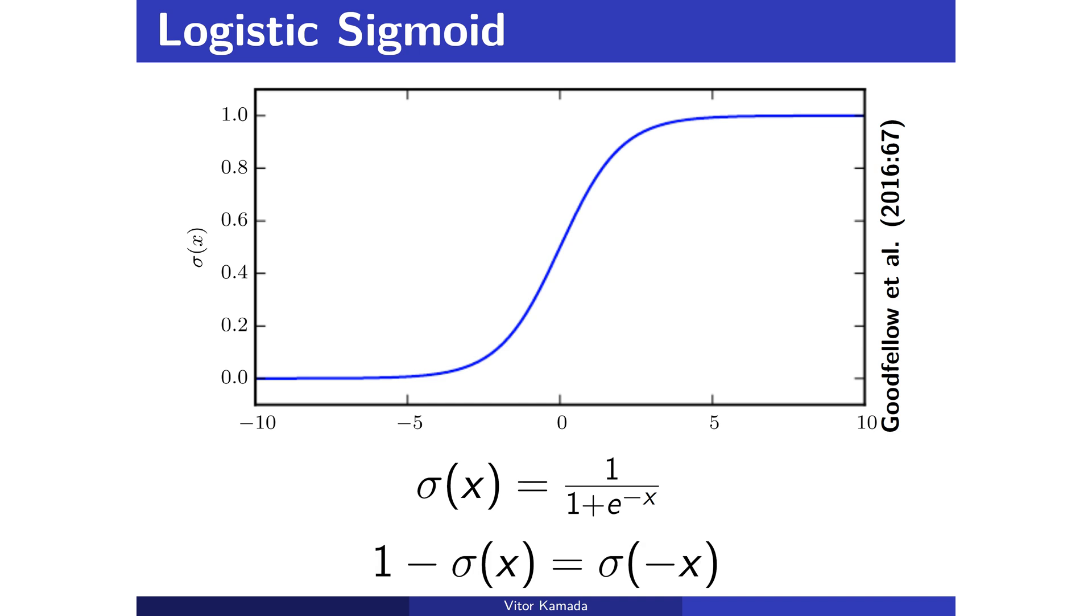See as well that the function has inverse symmetry. If you reflect the graphic around the y-axis, and you reflect again around the x-axis, you get a perfect symmetry. Let's assume that x equals 5. Then 1 minus sigma of 5 equals sigma of minus 5. You can visualize that the purple bar equals the green bar.